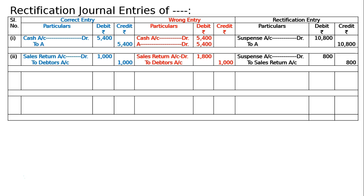Third entry: Rs. 2740 paid for repairs to motor car was debited to motor car account. The correct entry is repairs account debited to cash account, Rs. 2740. It was by mistake debited to motor car account in place of repairs account. There is a mistake in the name of the account and the amount — both were mistaken. Cash account Rs. 2740 is correct, hence repairs debit will come. Repairs account debited Rs. 2740 will come.